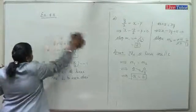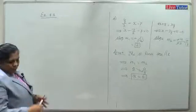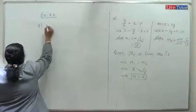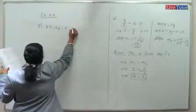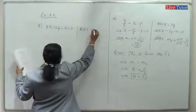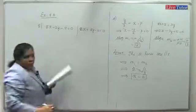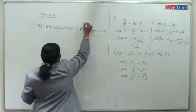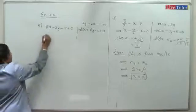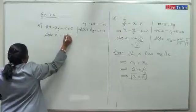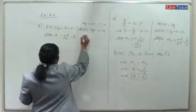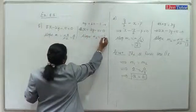Question 5: 2x plus ay minus 11 equals 0. Slope m1: a is the coefficient of y. Rearranged as ay plus 2x minus 11 equals 0, slope m1 equals minus 5 by minus 2, which is 5 by 2. Wait — actually slope m1 is minus 2 by a, and slope m2 must be found for the second line.